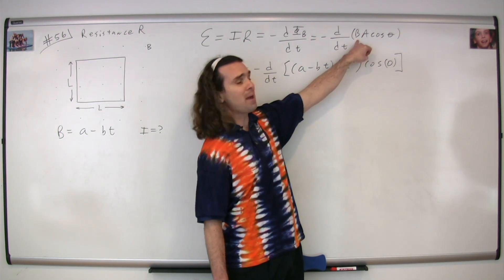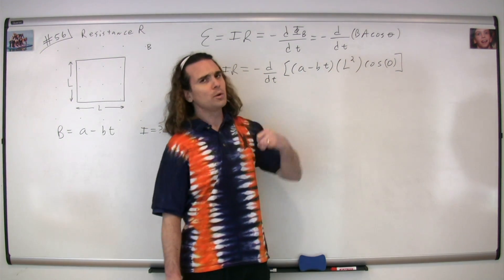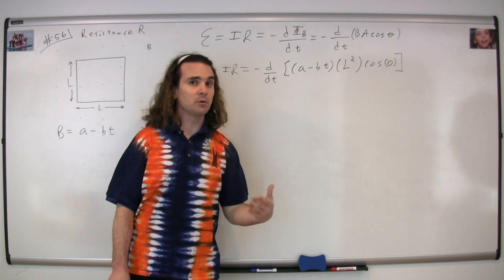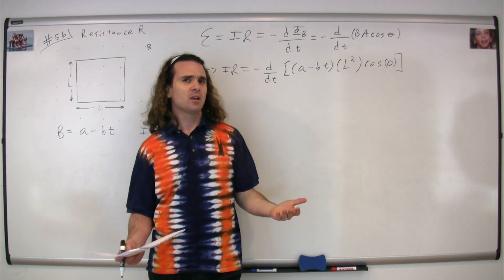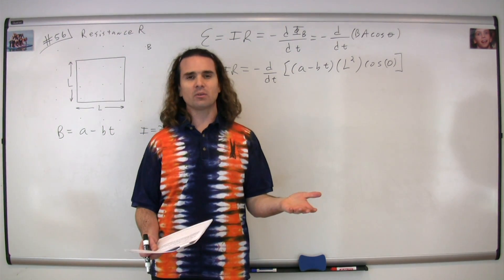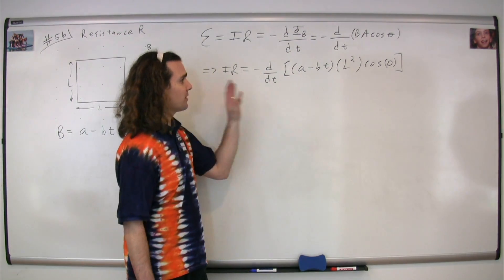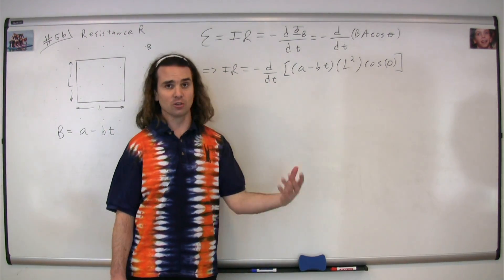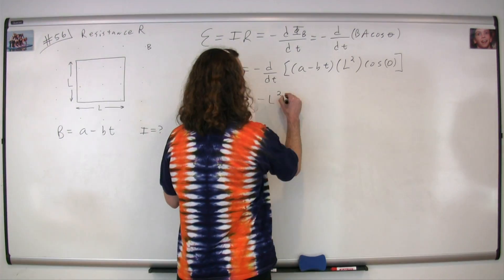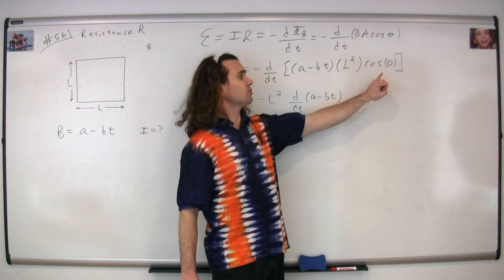Now theta is the angle between the magnetic field and the area vector. We don't actually know at this point whether it's going to be zero or 180 degrees, but I'm going to plug in zero because it doesn't really matter. We're going to use Lenz's Law to figure out the direction. We'll use Faraday's Law to figure out the magnitude of the current.